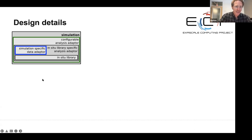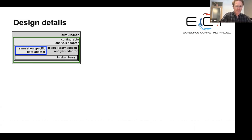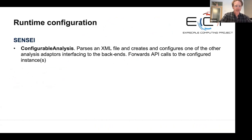At the very most nested level in this diagram is the in-situ library, which eventually gets the data and processes it. The green box shows the configurable analysis adapter — a meta adapter that parses XML and creates a library-specific analysis adapter instance, giving the system its runtime configurability. Nested within that is the blue box — the simulation-specific data adapter — which lets the analysis adapter fetch data based on how it's configured.